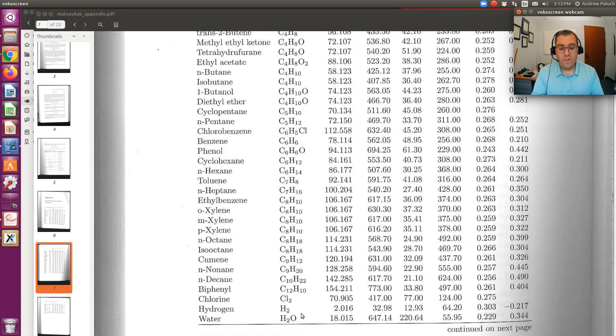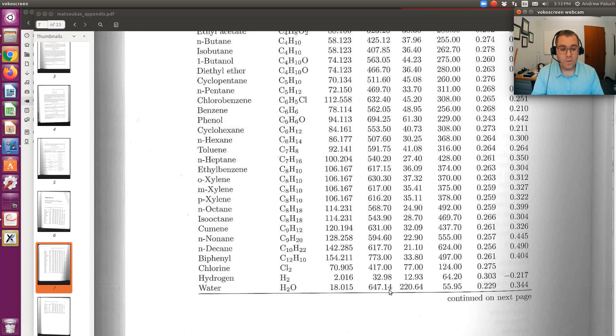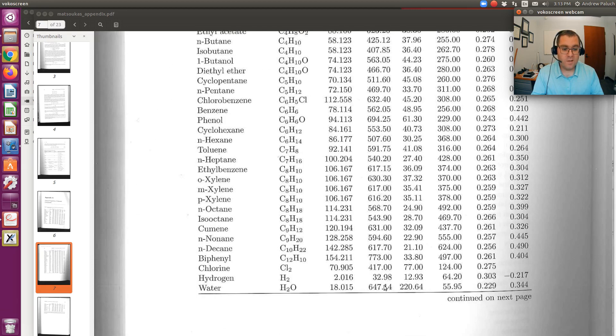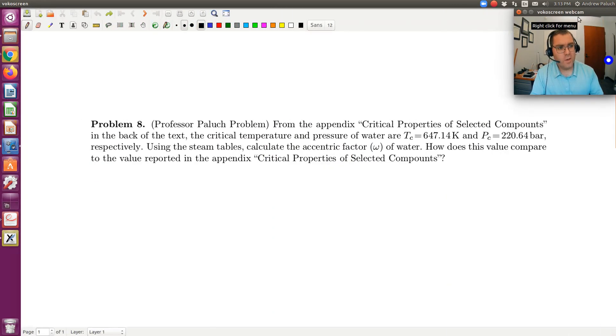Okay, so if I go to the very last entry, so I find water, all right, and I can read off Tc, Pc, temperature in Kelvin, pressure in bar, and then this last entry is omega. Okay, but in the problem, I ask you to go in and calculate it using the steam tables and compare it to that value that's tabulated just to, you know, again, make that connection.